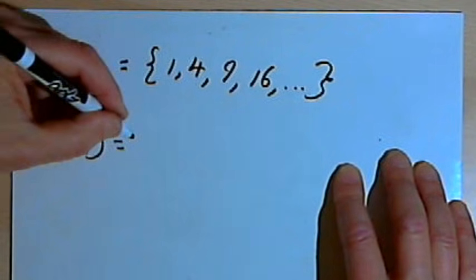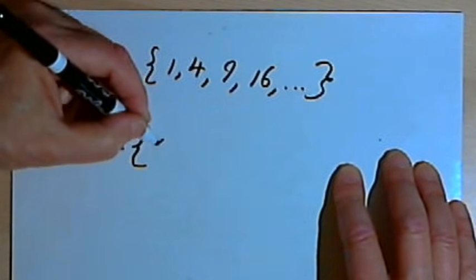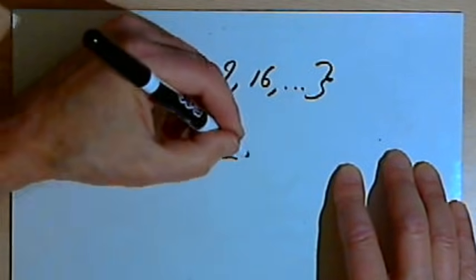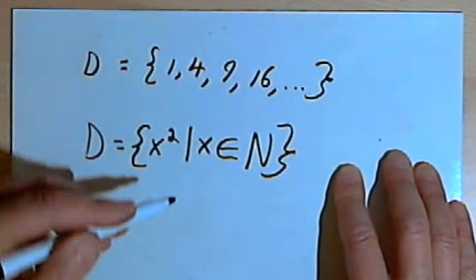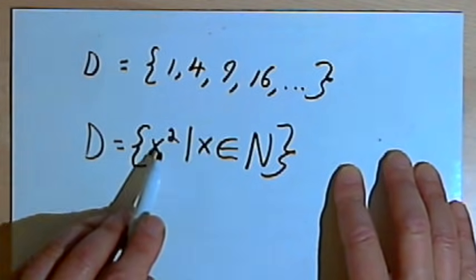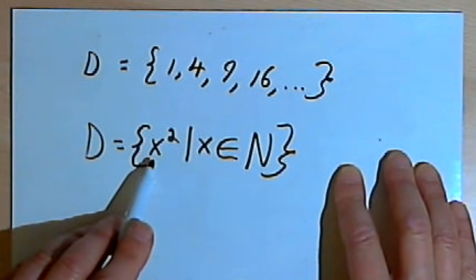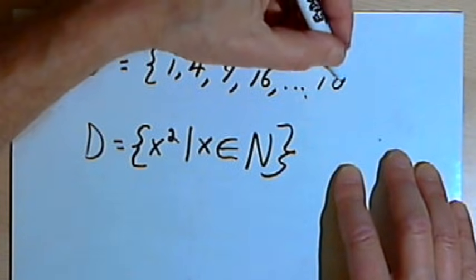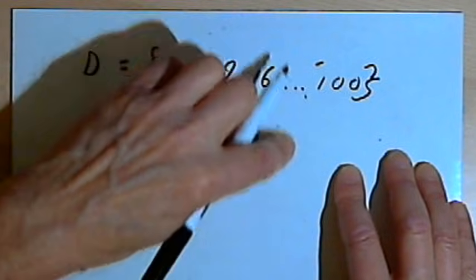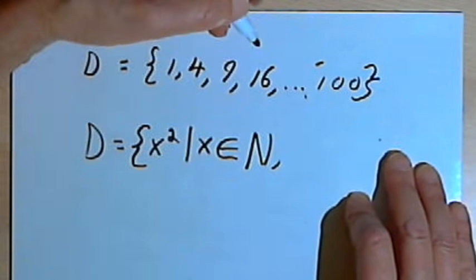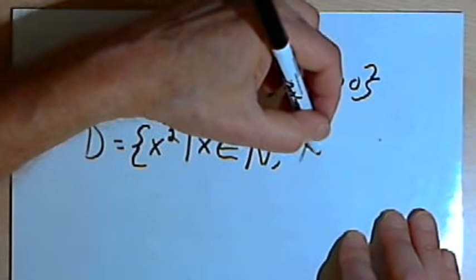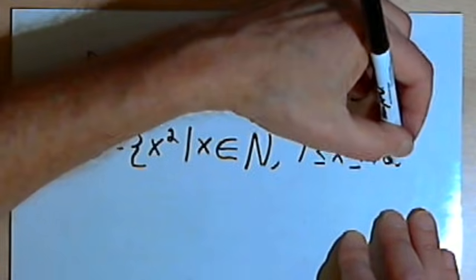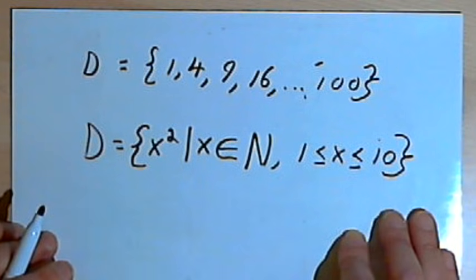I'm going to say that set D equals the set of all x squared, such that x is an element of set N. So when I do that, I'll have all the natural numbers, but the elements of set D are going to be the squares of those numbers. That's why I've written x squared. And again, if I only want to go up to, let's say 100, then besides saying x is an element of set N, I'm also going to say that 1 is less than or equal to x and is less than or equal to 10, because 10 squared will get me to 100.